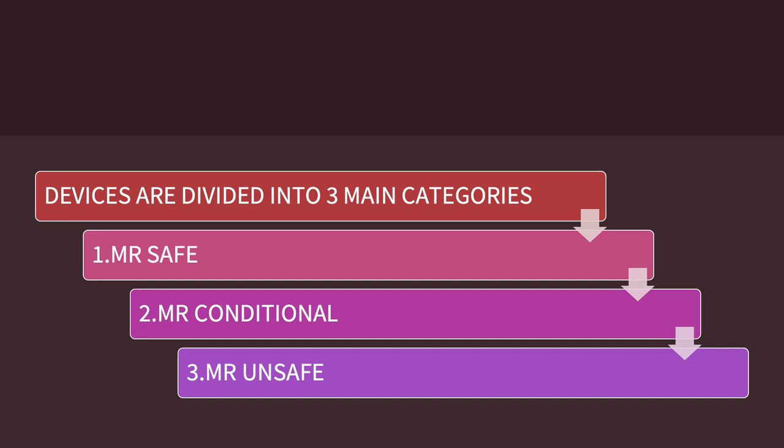Devices are subdivided into three main categories: 1. MRI safe implants, 2. MRI conditional implants, and 3. MRI unsafe implants. In the next slides, we are going to look at each and every category in more detail.